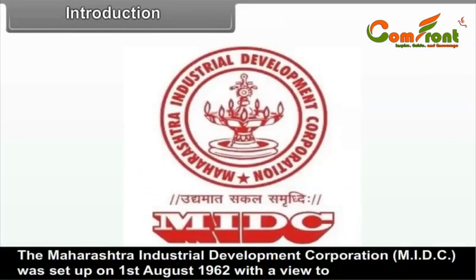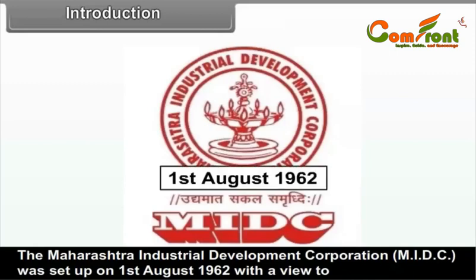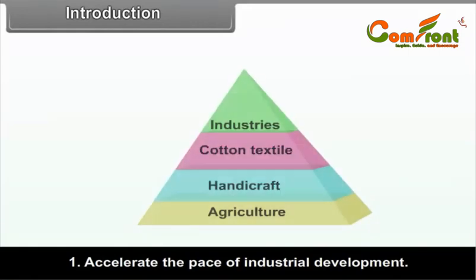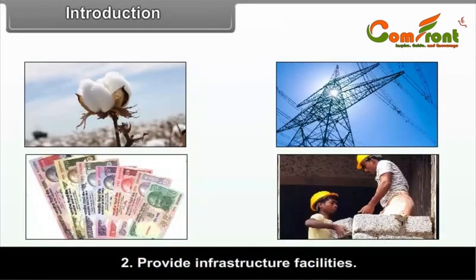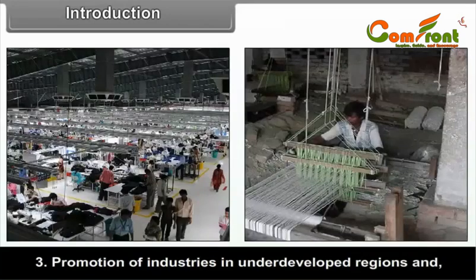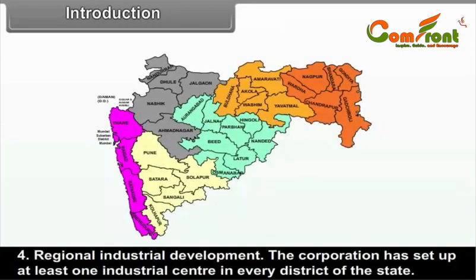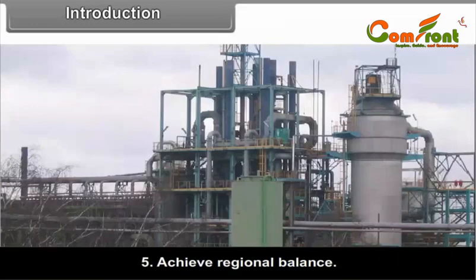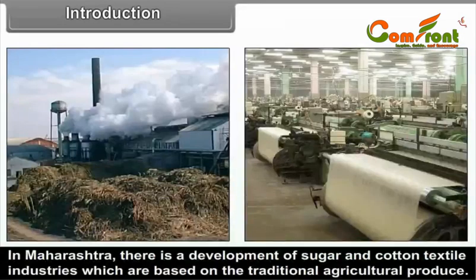The Maharashtra Industrial Development Corporation, MIDC, was set up on 1st August 1962 with a view to accelerate the pace of industrial development, provide infrastructural facilities, promotion of industries in underdeveloped regions and regional industrial development. The corporation has set up at least one industrial centre in every district of the state to achieve regional balance.